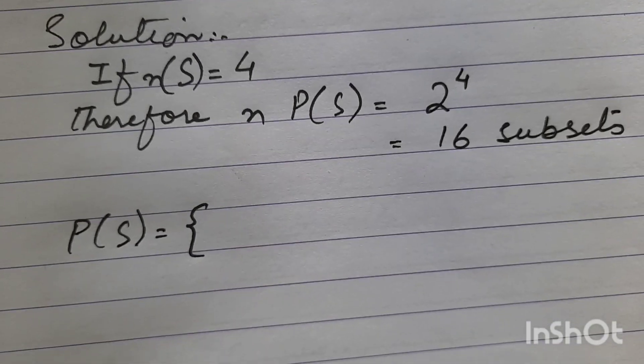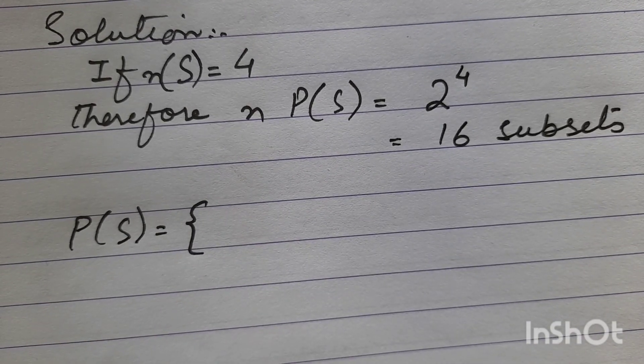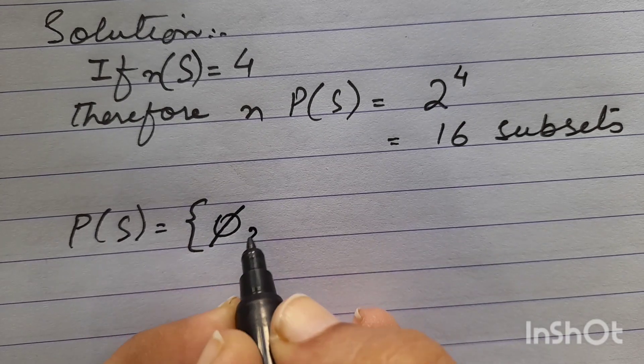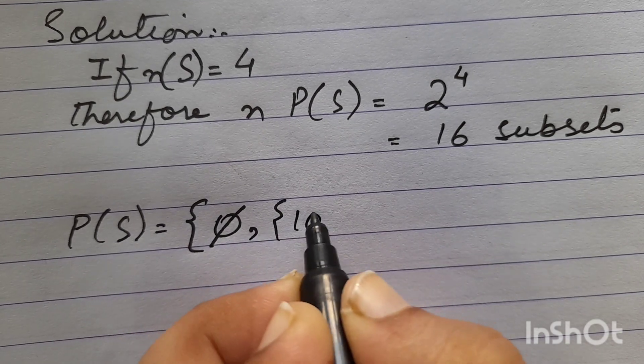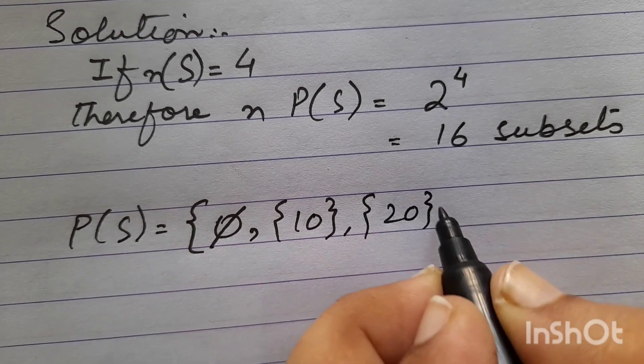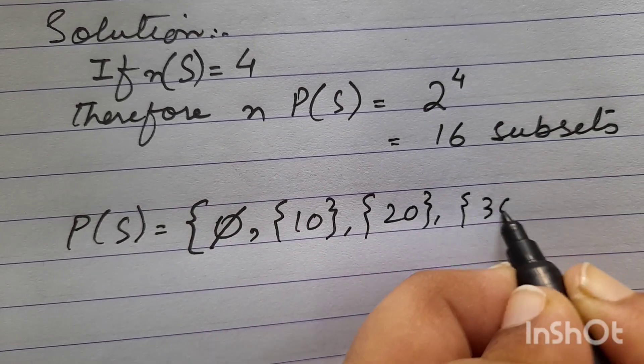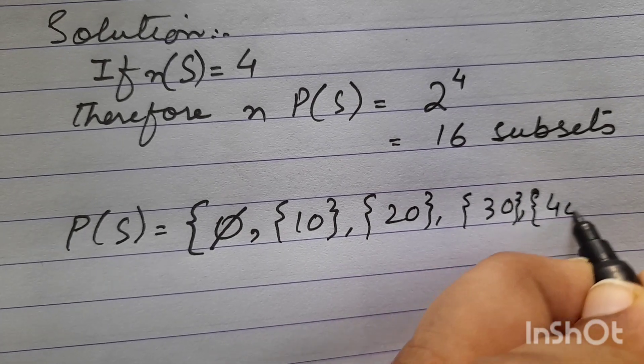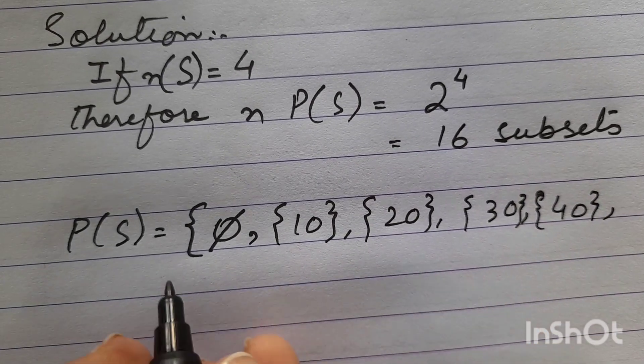Power set of S is equal to, first curly bracket, because power set is a set. So first set is null set, then 10, 20, 30, and 40. Now, after this, doubling.